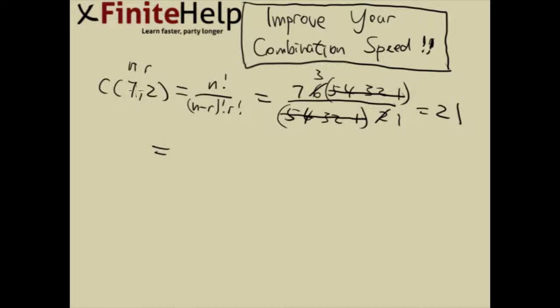A really quick way to do this is actually, so for the top, you can just look at the n, and then that's the number you're going to start with. And then you're going to go as many times as r on the top. So this here means going twice, so 7 and 6 on top. And in the bottom, you're going to start with r, which is 2, and then go down to 1. So here you have 7 times 6 over 2, and that comes out with 21. And that's way faster than listing it out.